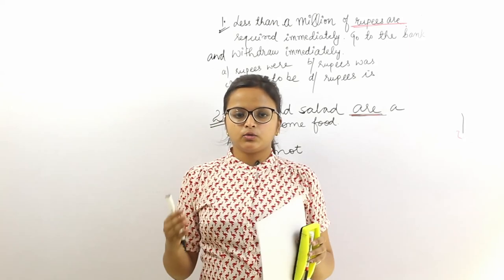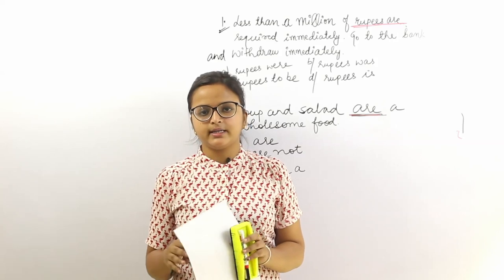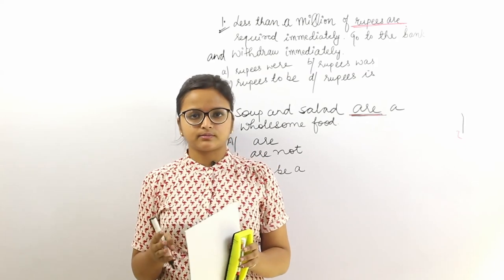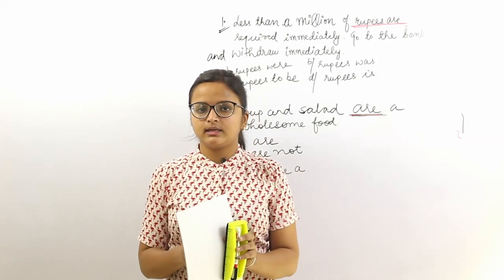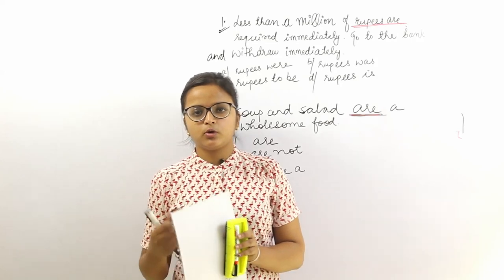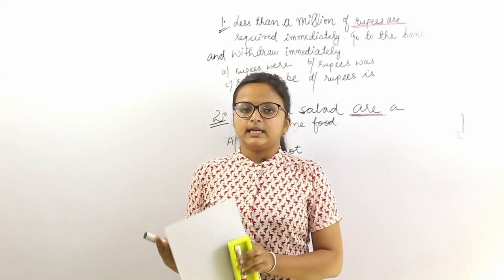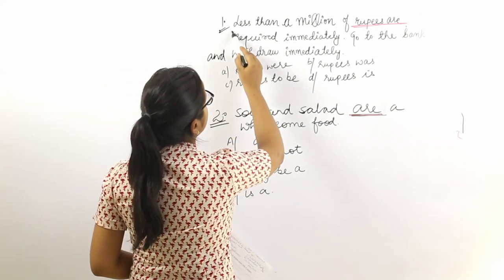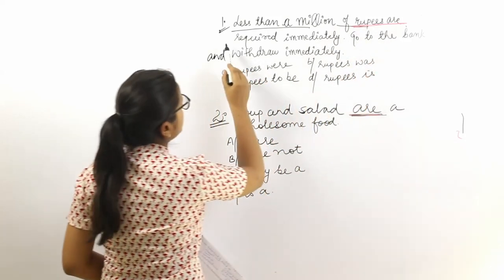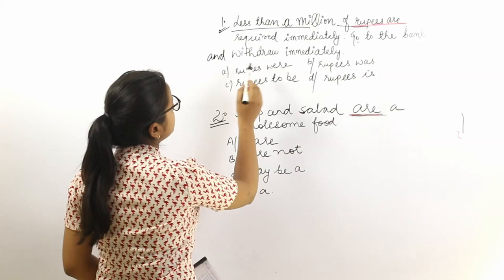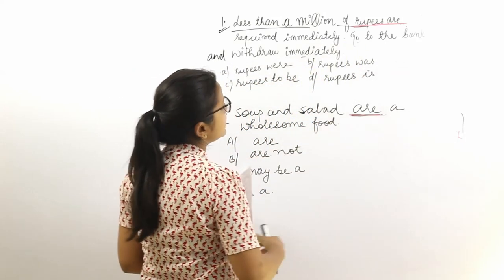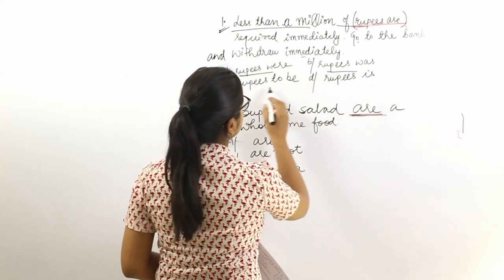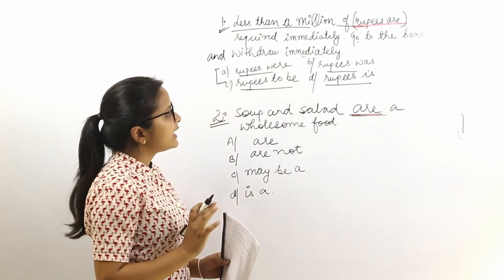Before starting, please go to YouTube and subscribe to our channel, Bank Exams Today. There is a video on tenses since some students are not aware of all the grammar rules — go check that video first. Now, the first sentence says: 'Less than a million of rupees are required immediately — go to the bank and withdraw.' The underlined phrase is 'rupees are,' and the options are: rupees were, rupees was, rupees to be, and rupees is.